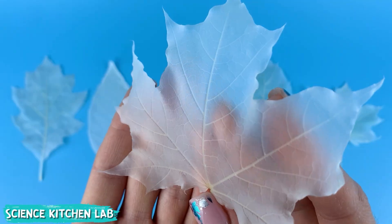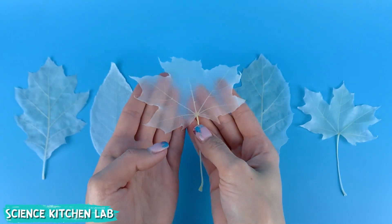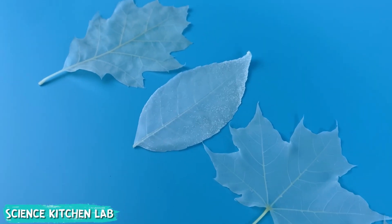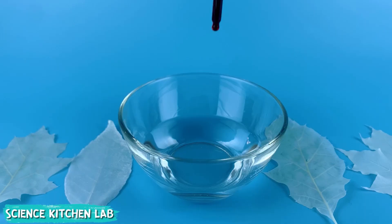Skeletonized leaves are leaves with only the veins remaining. The soft tissues are removed, creating a delicate skeleton, a network of veins.